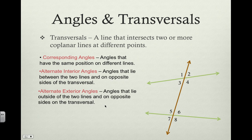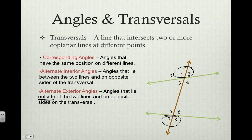Next, alternate exterior angles. These are similar to interior angles in that they lie on opposite sides of the transversal, but they are on the outside of the two lines. So we're looking at angles one, two, seven, and eight — they have to be on the outside of the lines and on opposite sides of the transversal, and they cannot lie on the same line. So angle one and angle eight are alternate exterior angles.